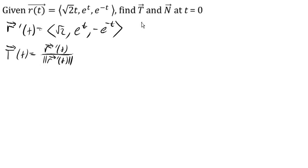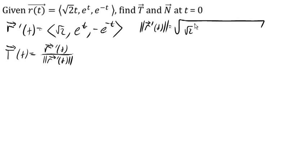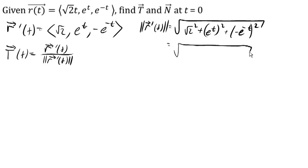So we're going to need the magnitude of this tangent vector. That's the square root of root 2 squared plus e to the t squared plus negative e to the negative t squared. Root 2 squared is 2, e to the t squared is e to the 2t, and the negative will square away, leaving us with e to the negative 2t.